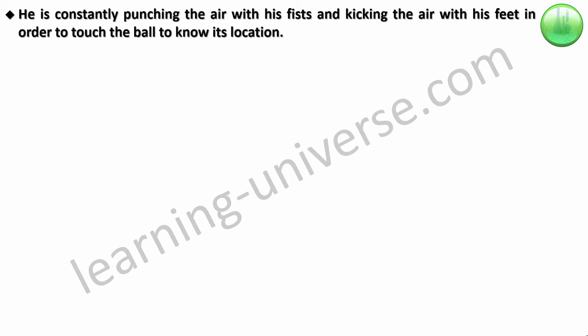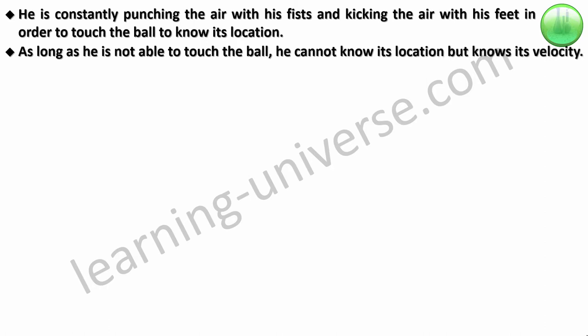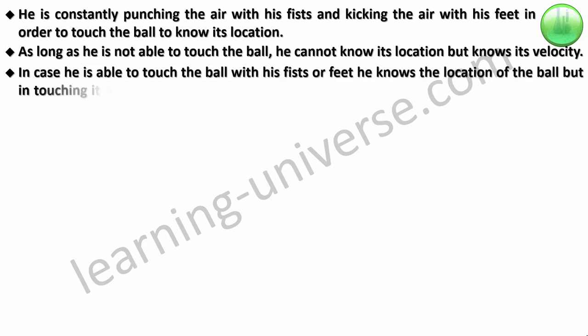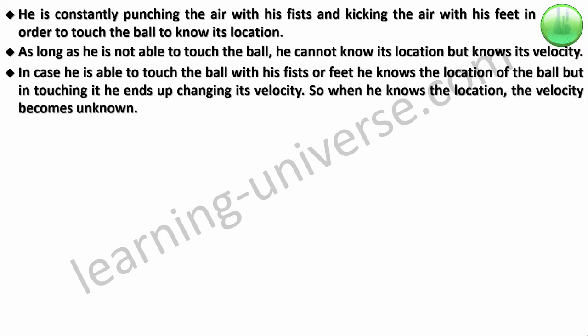In order to know where the ball is, he is constantly punching the air with his fists and kicking the air with his feet to touch the ball to know its location. As long as he is not able to touch the ball, he cannot know its location. But in case he is able to touch the ball, he knows the location at that moment. But in touching it, he ends up changing its velocity. So when he knows the location, the velocity becomes unknown.